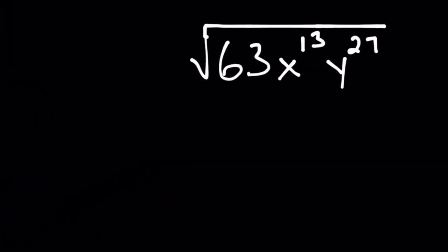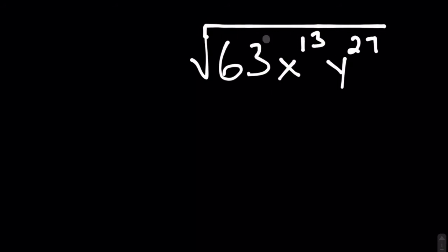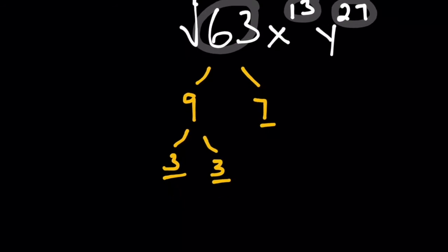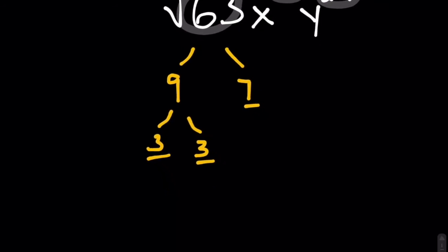Our last example is the square root of 63x to the thirteenth, y to the twenty-seventh — a constant and two variable terms, both of which we must contend with because both powers are odd. We'll break down 63 first as the product of nine times seven, seven being prime. Nine breaks down into three times three. We then rewrite our radical as the square root of seven times three times three for the 63.